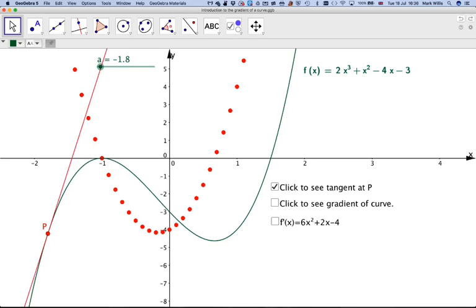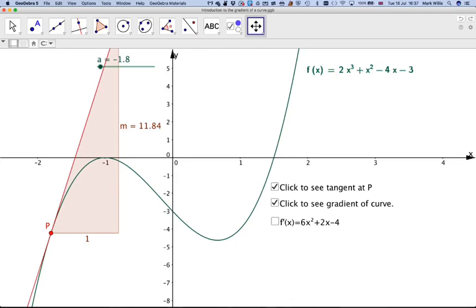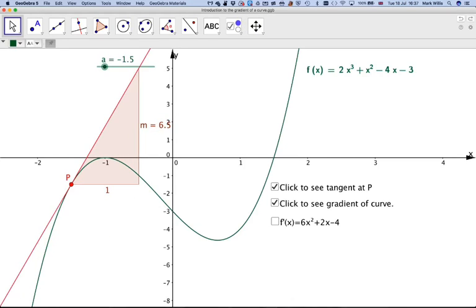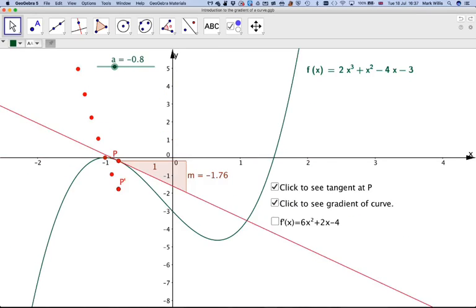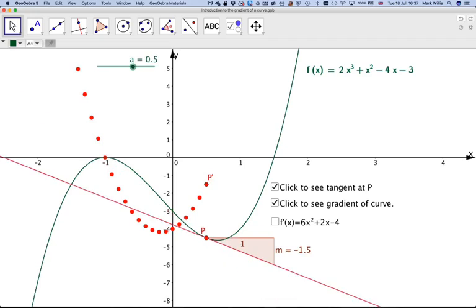So, in order to find the gradient, we need to use the gradient of the tangent. And you can see it changes. This here actually calculates the gradient of the tangent. Remember, the gradient is this distance divided by this distance here. And I can find the gradient by doing that.